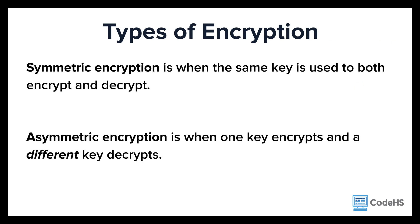There are two common types of encryption. In symmetric encryption, the same key is used to encrypt and to decrypt. In asymmetric encryption, one key is used for the encryption and then a separate key is used to decrypt the message.